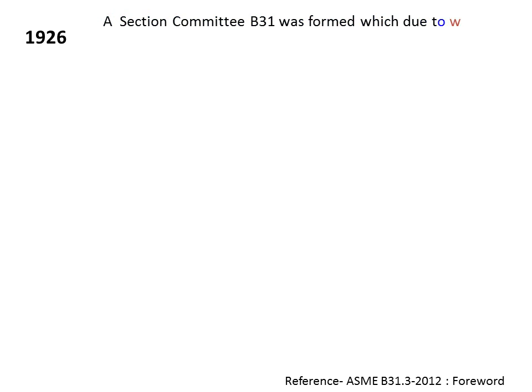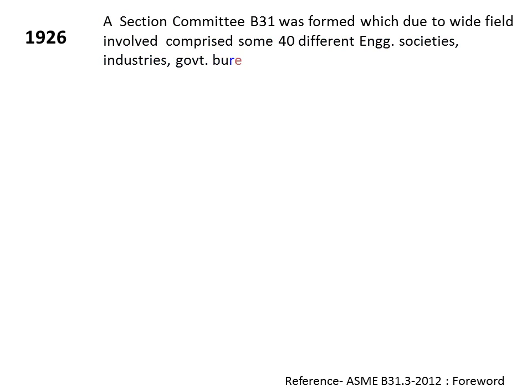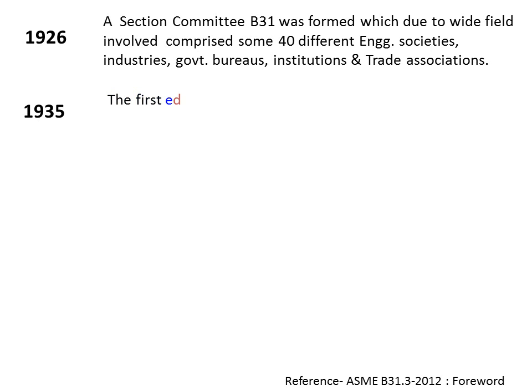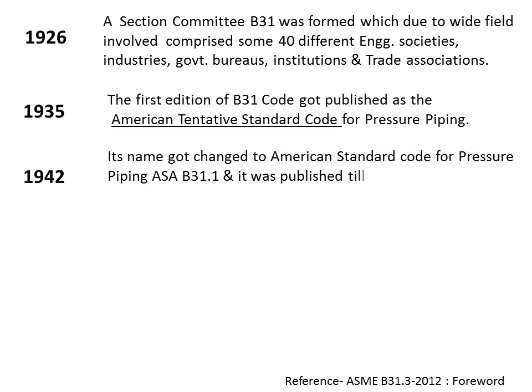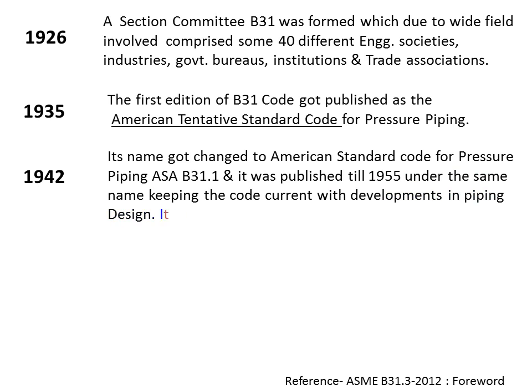In 1926, a section committee B31 was formed, which due to the wide field involved comprised some 40 different engineering societies, industries, government bureaus, institutions, and trade associations. Nine years later, in 1935, the first edition of the B31 code was published as the American Tentative Standards Code for Pressure Piping. In 1942, its name changed to American Standard Code for Pressure Piping, ASAB31.1, and it was published until 1955 under the same name, keeping the code current with developments in piping design. It then comprised separate sections for different industries.